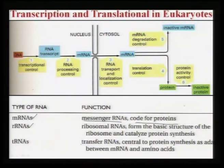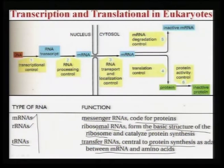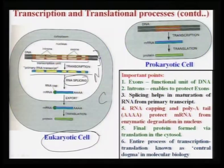There is also rRNA — ribosomal RNA — which forms the basic structure of the ribosome, the protein synthesis unit in the cytoplasm. tRNA (transfer RNA) is central to protein synthesis, linking mRNA and amino acids. In eukaryotic cells, the transcription process is completed within the nucleus, while the translational process occurs outside the nucleus in the cytoplasm, where the protein is ultimately synthesized.